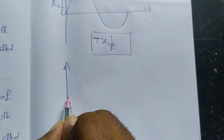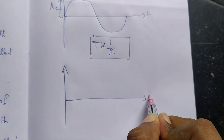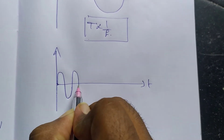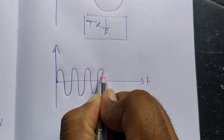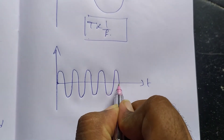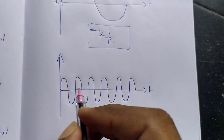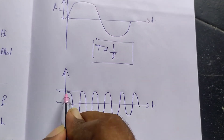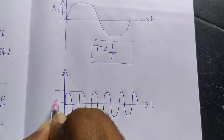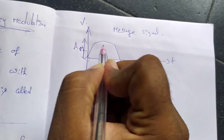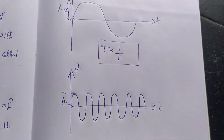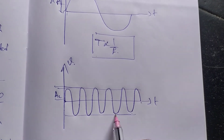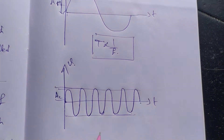The carrier signal has a constant amplitude. It is constant. This is a high frequency signal. The amplitude is AC. This message signal is AM. Now, the carrier signal is constant, but here we have angular modulation.